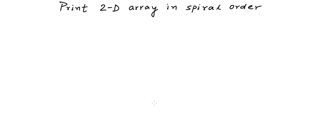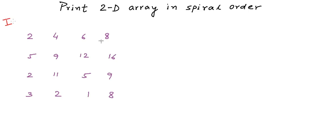In this lesson, we are going to solve one programming interview question. The question is: given a two dimensional array of integers, we want to traverse and print the elements in the array in spiral order. Our input array may have any number of rows and any number of columns. We want to traverse this array in spiral order in the clockwise direction.